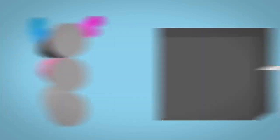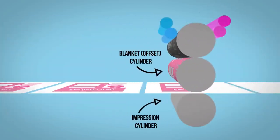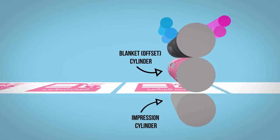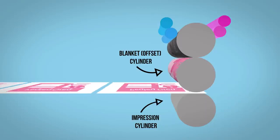The paper is passed between the blanket cylinder and the impression cylinder where it receives the printed image before it's passed on to the next unit to receive the next color.